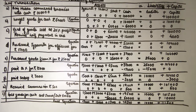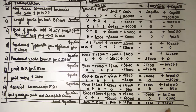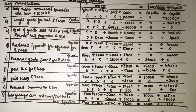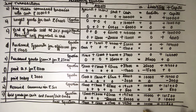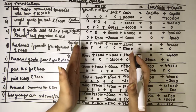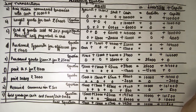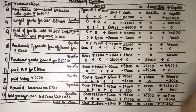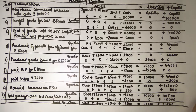Now let's check at the end — are total assets equal to liabilities plus capital? Adding up assets gives 1,21,500. Adding the right side also gives 1,21,500. This side equals that side, which means our question is correct and the accounting equation is proved. That's enough for today; we will do another topic tomorrow. See you tomorrow, thank you.